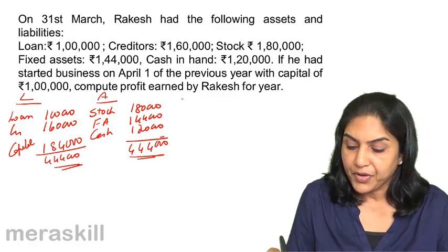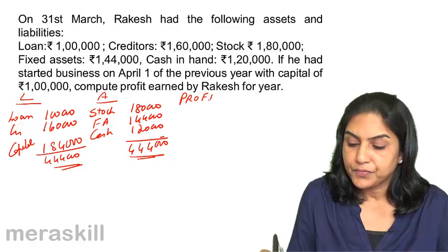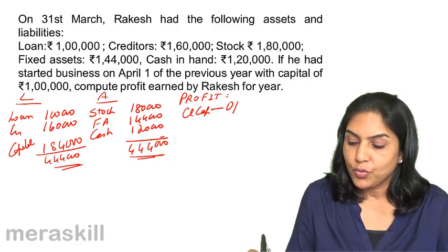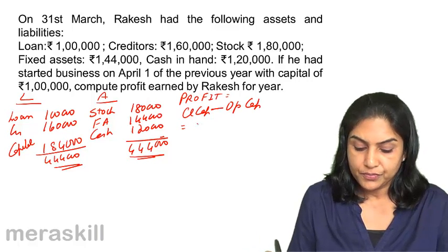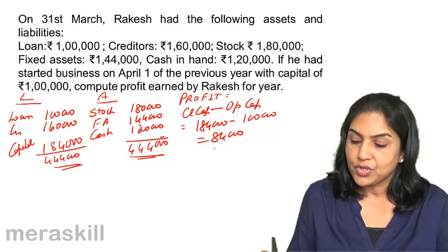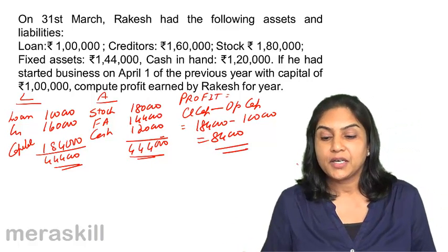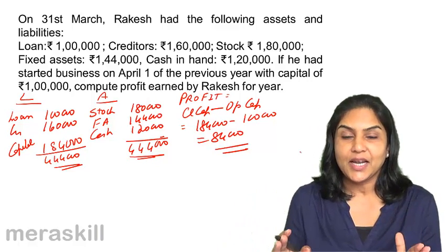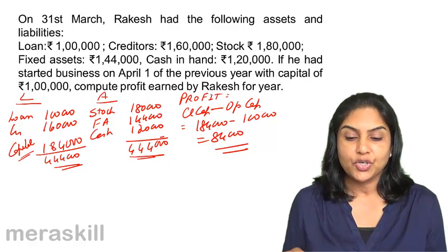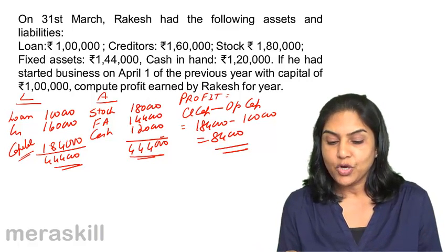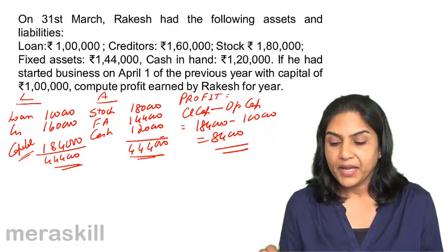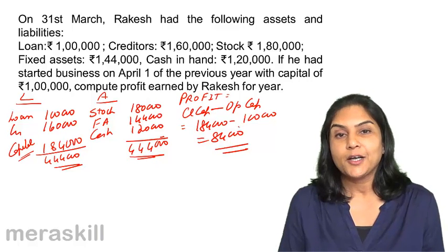So what would be the profit? Profit would be equal to closing capital minus opening capital, which is 1 lakh 84,000 minus 1 lakh, which should be 84,000 — the amount of profit earned by Rakesh. Assets minus liabilities gives us the capital. 1 lakh 84,000 is the closing capital of Rakesh. Opening capital was 1 lakh. Therefore, closing capital minus opening capital, 84,000, should be the profit for the year.